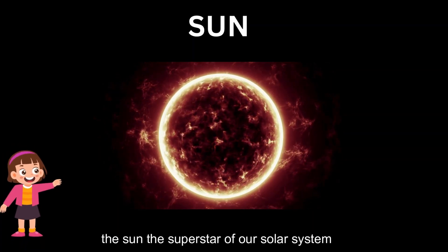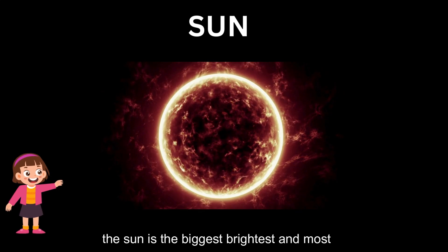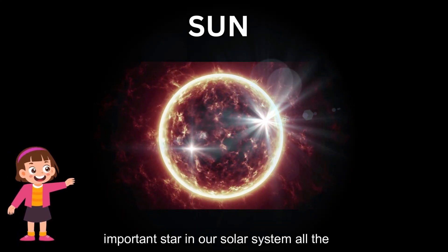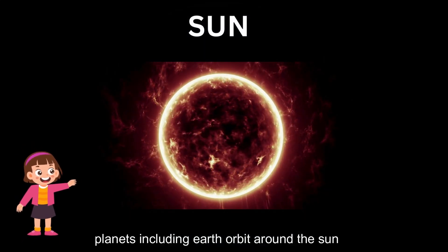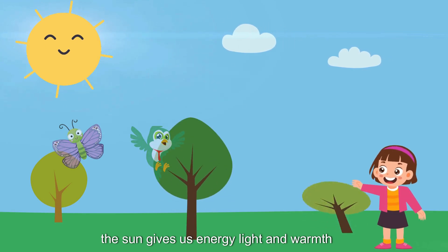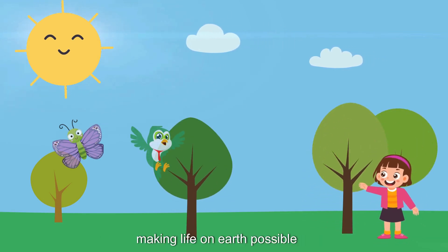The Sun, the superstar of our solar system. The Sun is the biggest, brightest and most important star in our solar system. All the planets, including Earth, orbit around the Sun. The Sun gives us energy, light and warmth, making life on Earth possible.